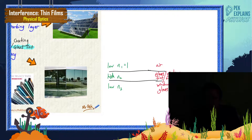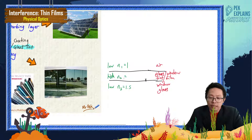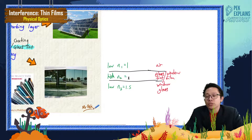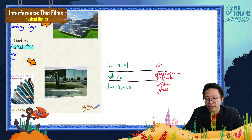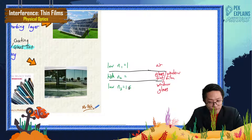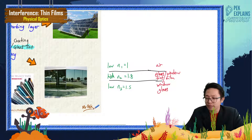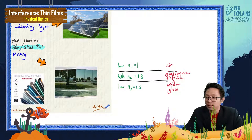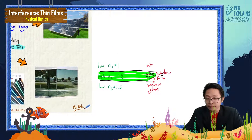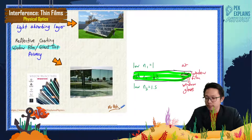So the window film in the middle must have a refractive index higher than both the air and the glass — higher than 1.5 — so around 1.8. This follows the low–high–low refractive index sequence. With this configuration, you get two anti-phase sources, which gives you reflective coating. You can use a green or blue colored window film.